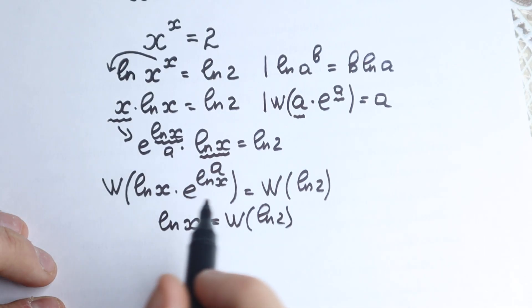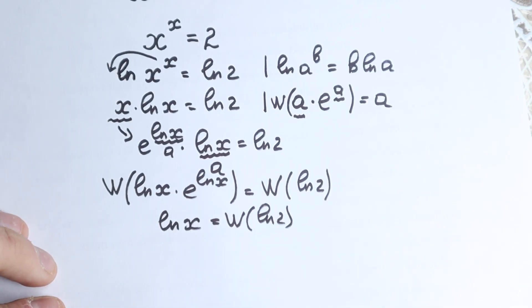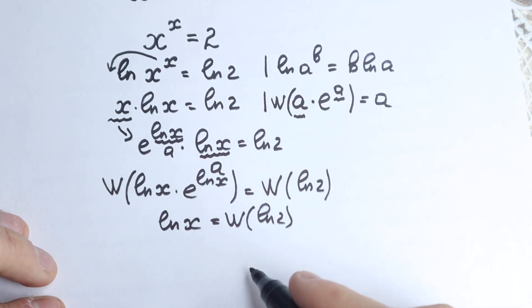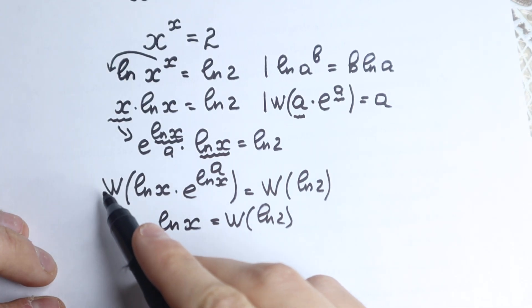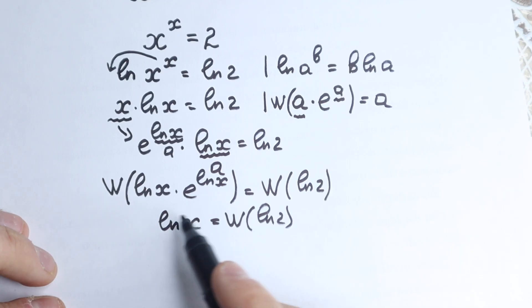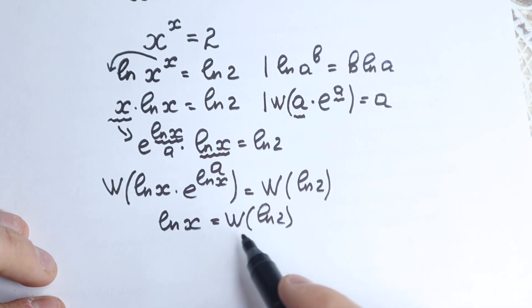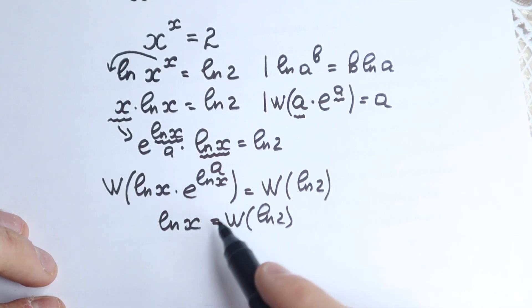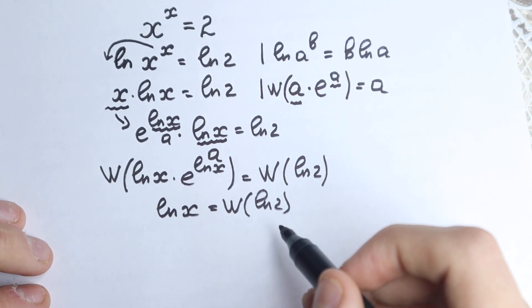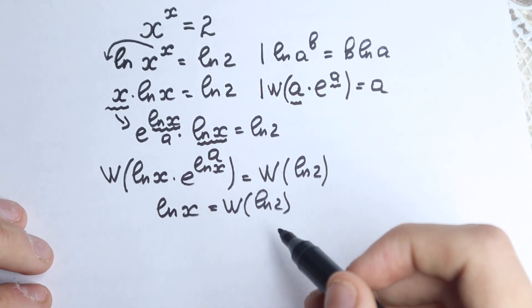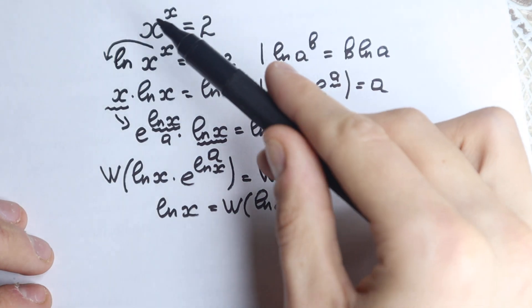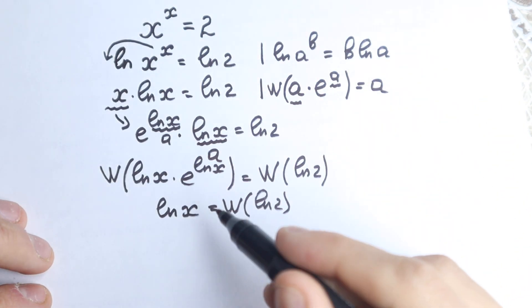We now have ln(x) = W(ln 2), which is a really clean expression. But in math we're interested in finding x itself, so we need one more step.